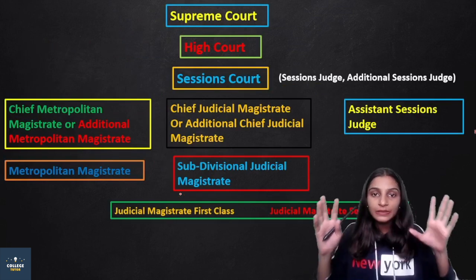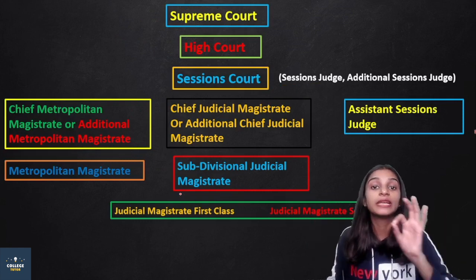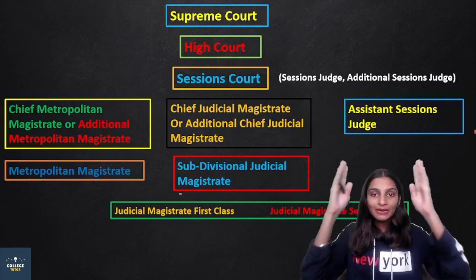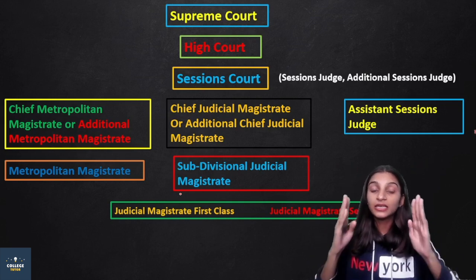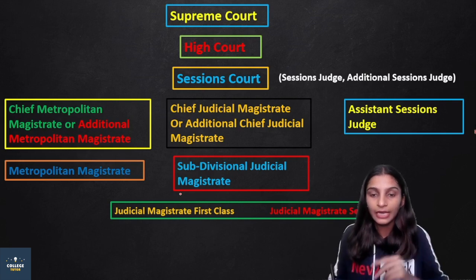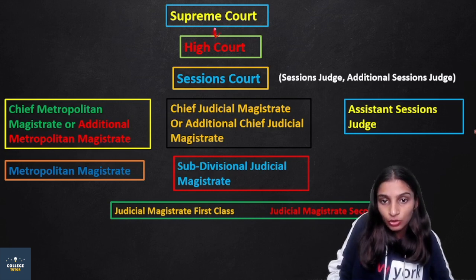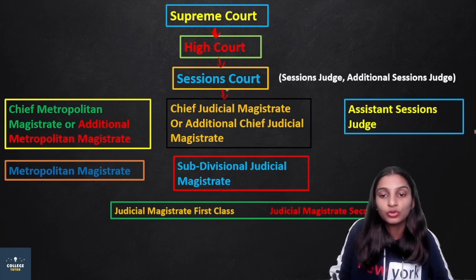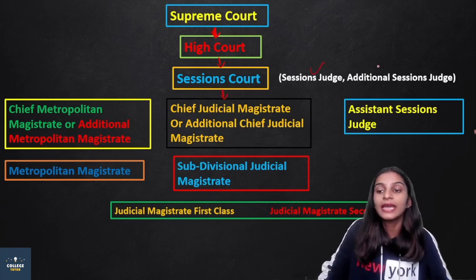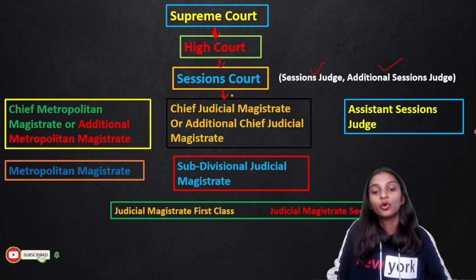I have prepared a chart showing the hierarchy of Criminal Courts. At the top is the Supreme Court. Below that is the High Court. Then comes the Sessions Court. The Sessions Court includes the Sessions Judge and Additional Sessions Judge. Here there is a bifurcation — the Sessions Court is divided further, including the Assistant Sessions Judge.